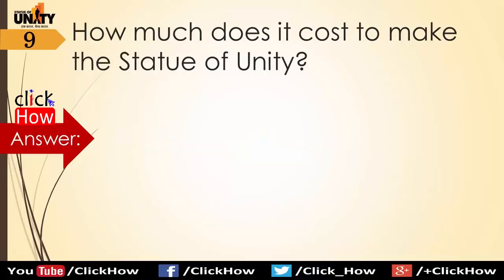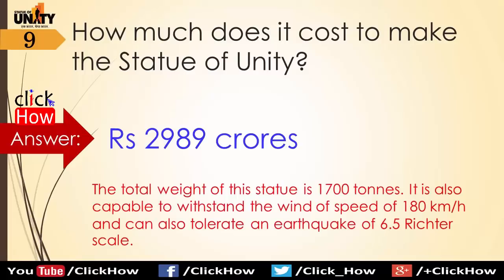Question 9: How much did it cost to make the Statue of Unity? Answer is 2,989 crores. The total weight of this statue is 1,700 tons. It is also capable of withstanding wind speeds of 180 km per hour and can also tolerate an earthquake of 6.5 on the Richter scale.